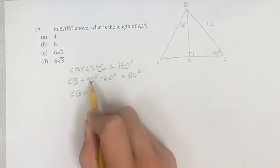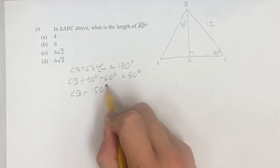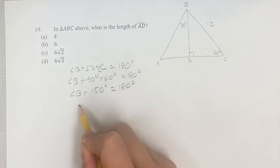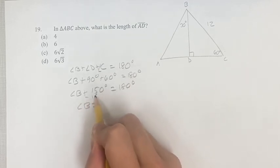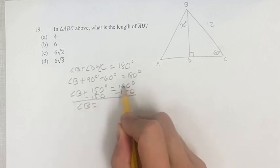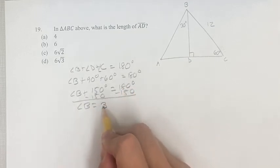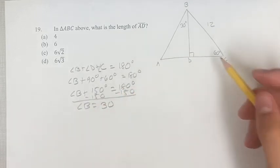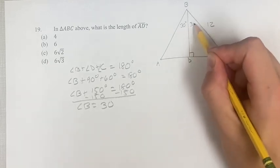So angle B plus 90 plus 60 is 150. Therefore, angle B, we subtract 150 from both sides. Angle B is equal to 180 minus 150, which is 30 degrees. So angle B is 30 degrees.